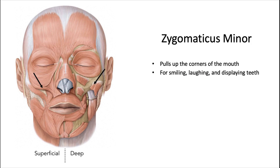The zygomaticus minor muscle also pulls up the corners of the mouth for smiling, laughing, and displaying teeth. It originates a little more medial to the zygomaticus major, inserts a little bit higher up, and overall is a smaller muscle — hence the name minor.